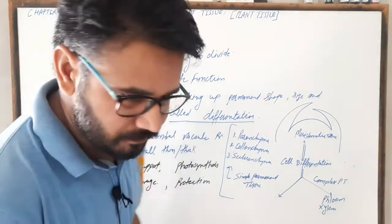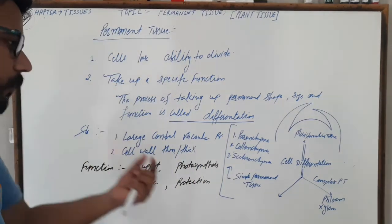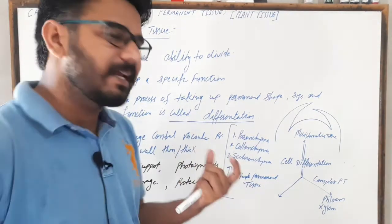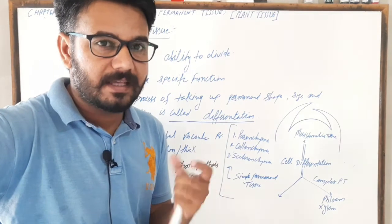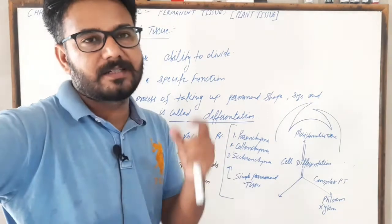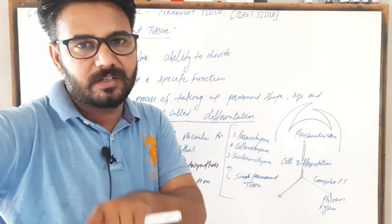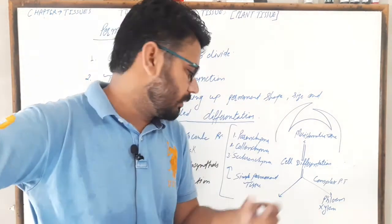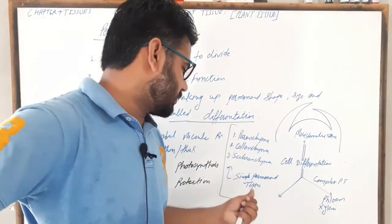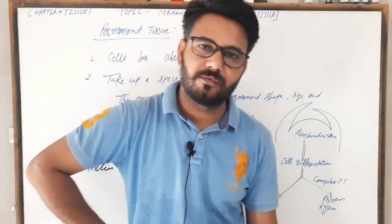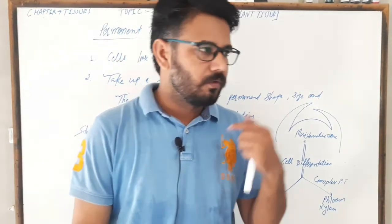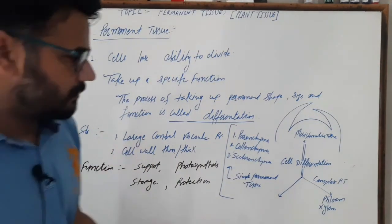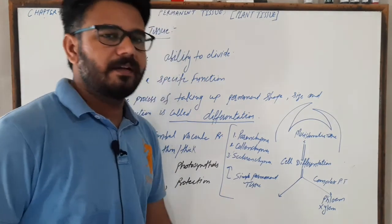Simple permanent tissue is formed by one type of cells. These cells are structurally and functionally similar. These are three types of simple permanent tissue and two types of complex permanent tissue, that is phloem and xylem.